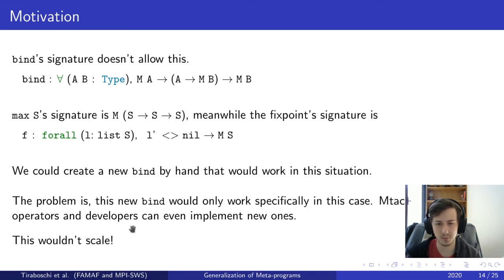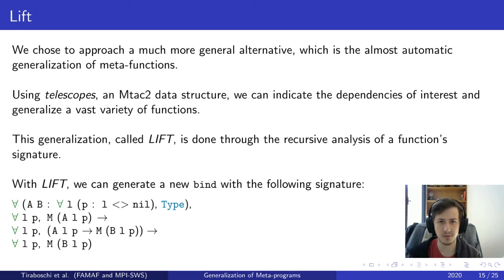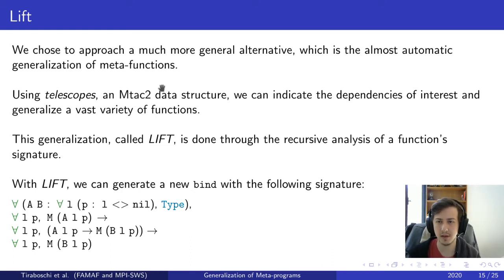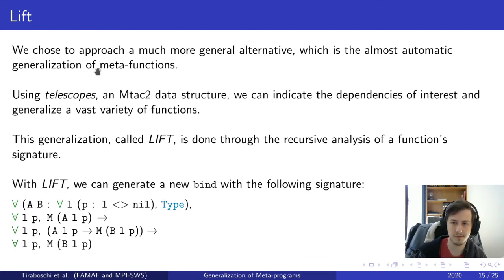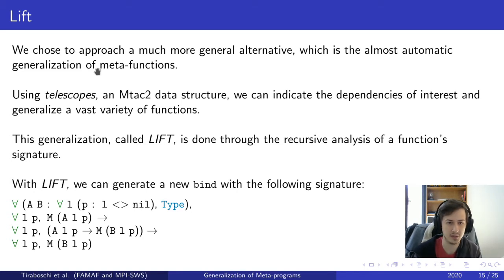We don't want to code a specific function each time we want to use it. So we chose to approach a much more general alternative: the almost automatic generalization of meta functions. Using telescopes — an Mtac2 data structure we'll introduce in a minute — we can indicate the dependencies of interest and generalize a wide variety of functions. We'll call this generalization LIFT, and it's basically a recursion over the signature of the function.